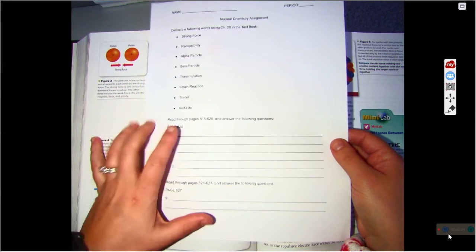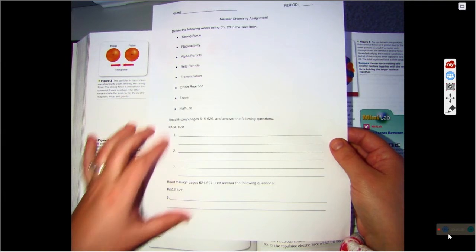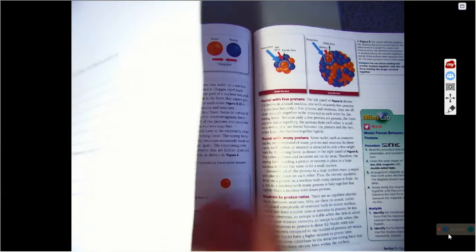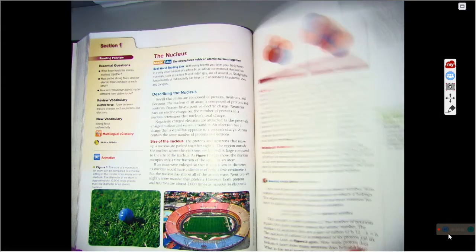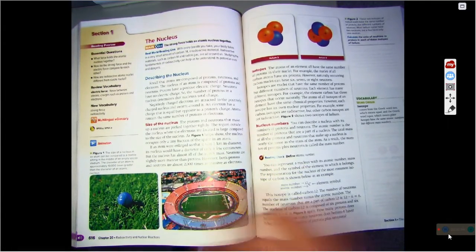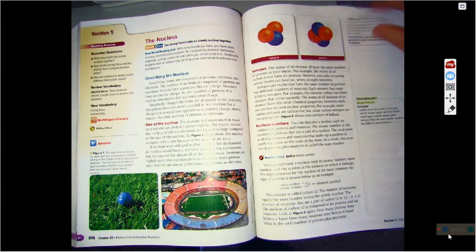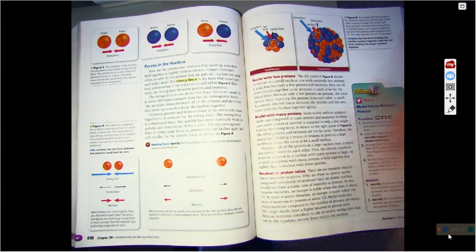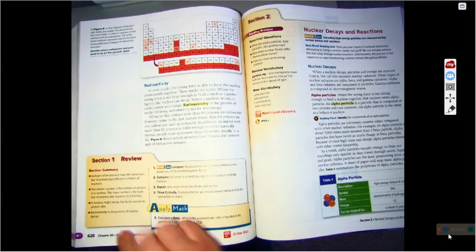Now it says read through pages 616 to 620 and answer the following questions. So that's section one. So if I go back to page 616, see it at the bottom, I read 616, 617, 618, 619, and then there's 620 right here.